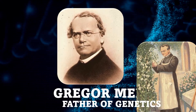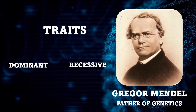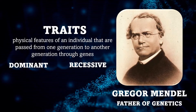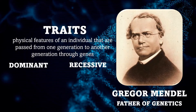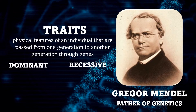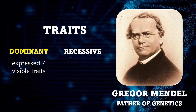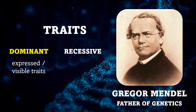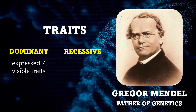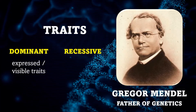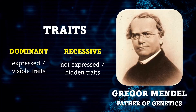According to him, traits can be dominant or recessive. When we say traits, these are the physical features of an individual, and these are passed from one generation to another through genes. Dominant traits are the characteristics that are expressed or visible in an organism. On the other hand, recessive traits are characteristics that are hidden or not expressed in an organism.